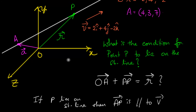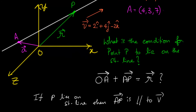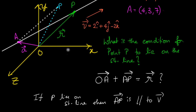Let me elaborate further. Imagine point P is somewhere off the line. The equation OA + AP = R would still hold. But notice — since point P does not lie on the straight line, AP is not parallel to vector V. And that's how we recognize that this point does not lie on the straight line. So this is truly the condition.